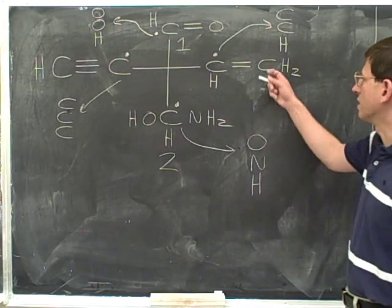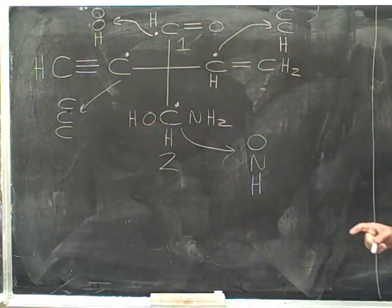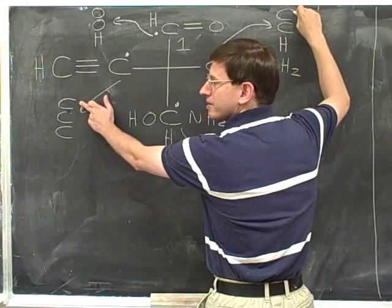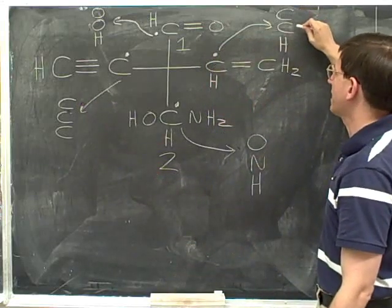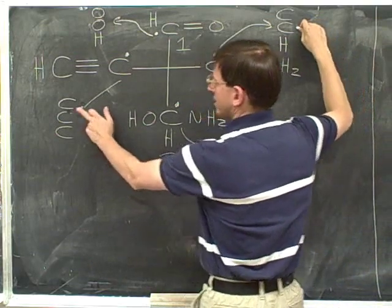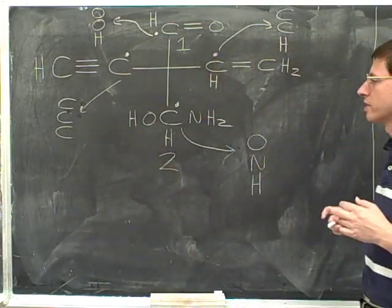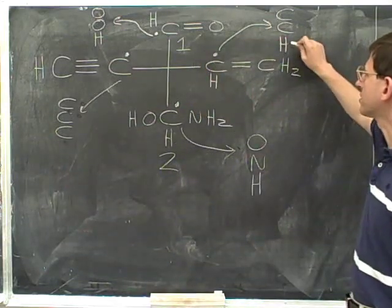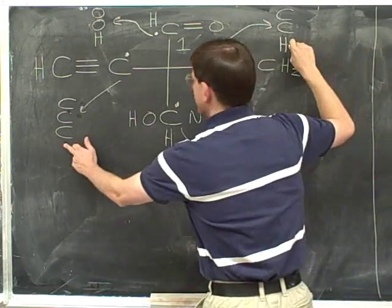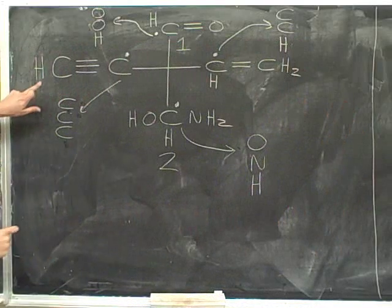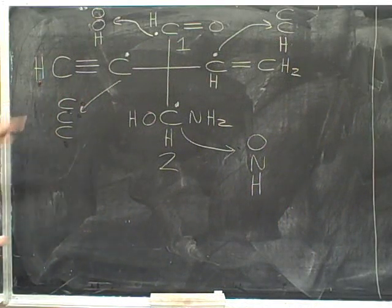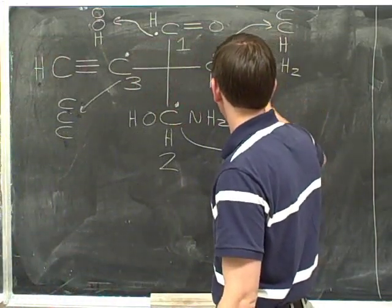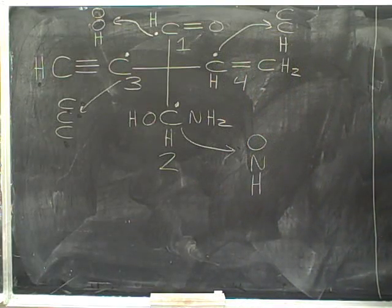Now we have to compare the substituents on the right and on the left. They're tied at the first two atoms in the list — both start with carbon, and the second atom in both lists is also carbon. We can break the tie when we look at the third atoms: on the left, the third atom is a carbon, and on the right, the third atom is a hydrogen. Carbon beats hydrogen, so the left-hand substituent has the better priority — number three — and the right-hand substituent is the number four priority. We've now assigned all four priorities.